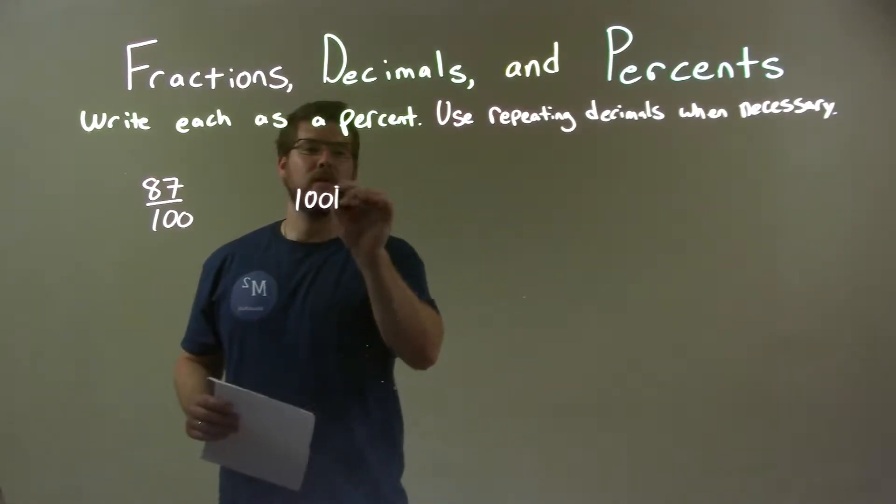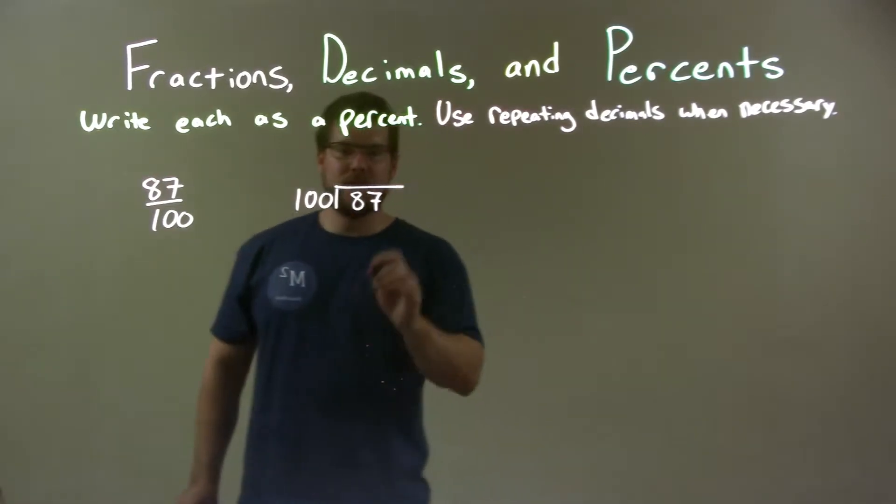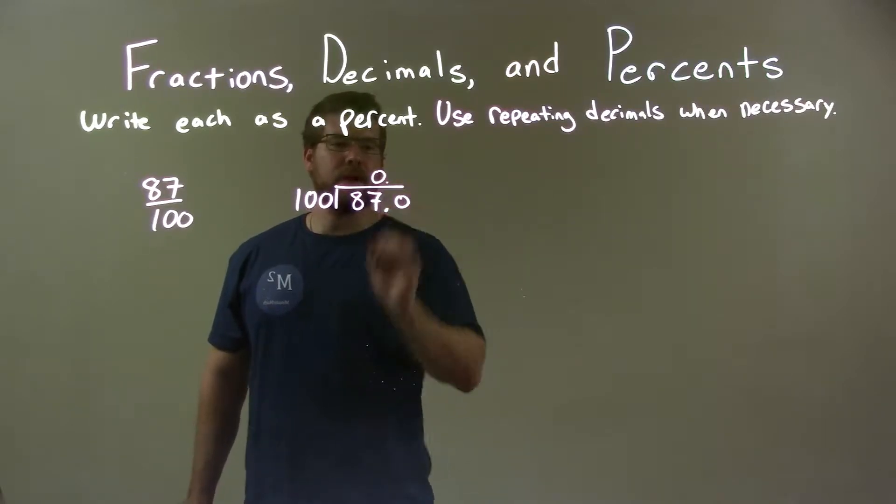100 goes into 87. Well, 100 does not go into 87 evenly or nicely or at all really. So we add a 0 on top there.